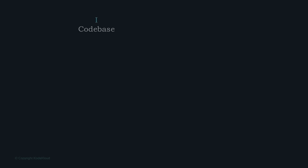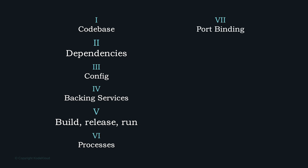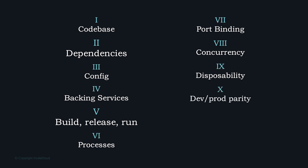The 12 factors are: (1) have one codebase; (2) explicitly declare and isolate dependencies; (3) store config in the environment; (4) treat backing services as attached resources; (5) strictly separate build and run stages; (6) execute the app as one or more stateless processes; (7) export services via port binding; (8) scale out via the process model; (9) maximize robustness with fast startup and graceful shutdown; (10) keep development, staging, and production as similar as possible; (11) treat logs as event streams; (12) run admin or management tasks as one-off processes.